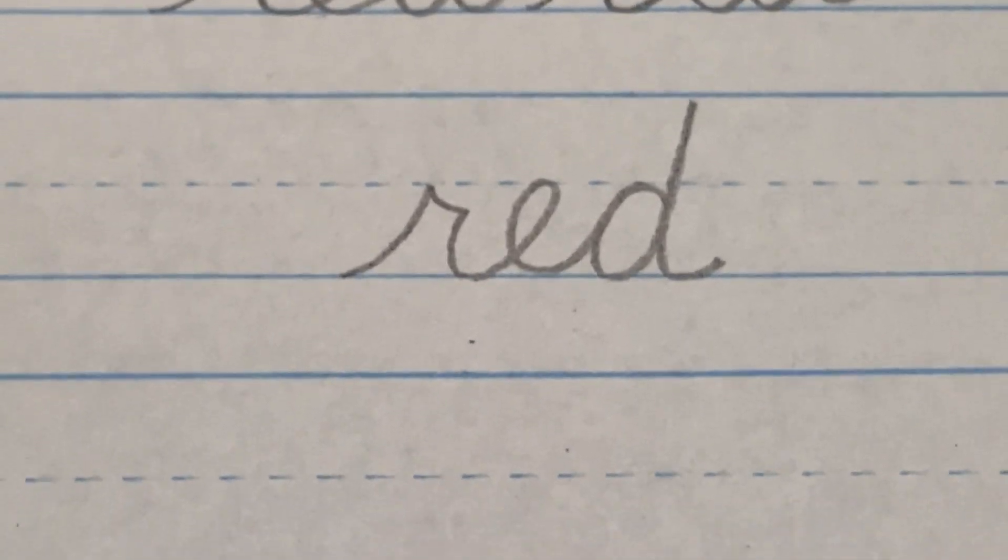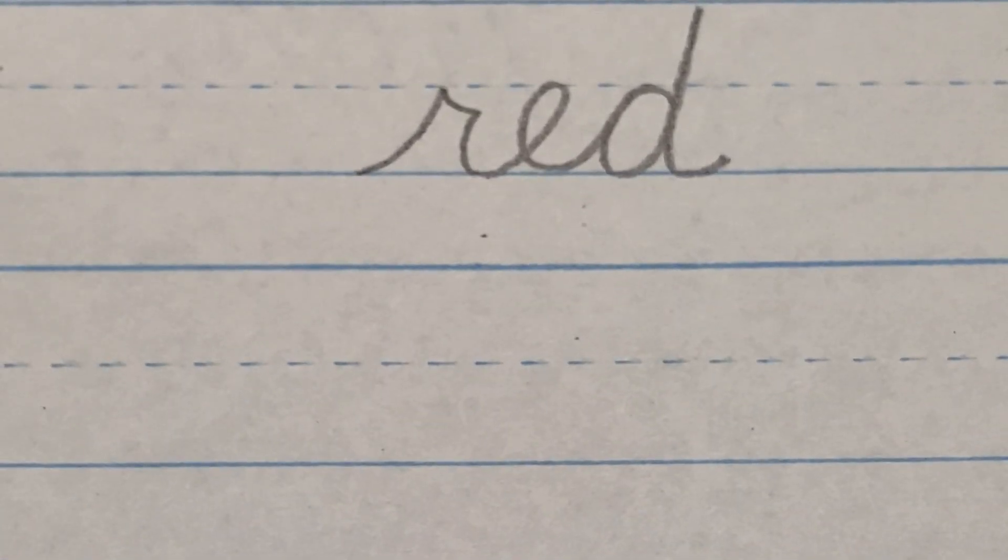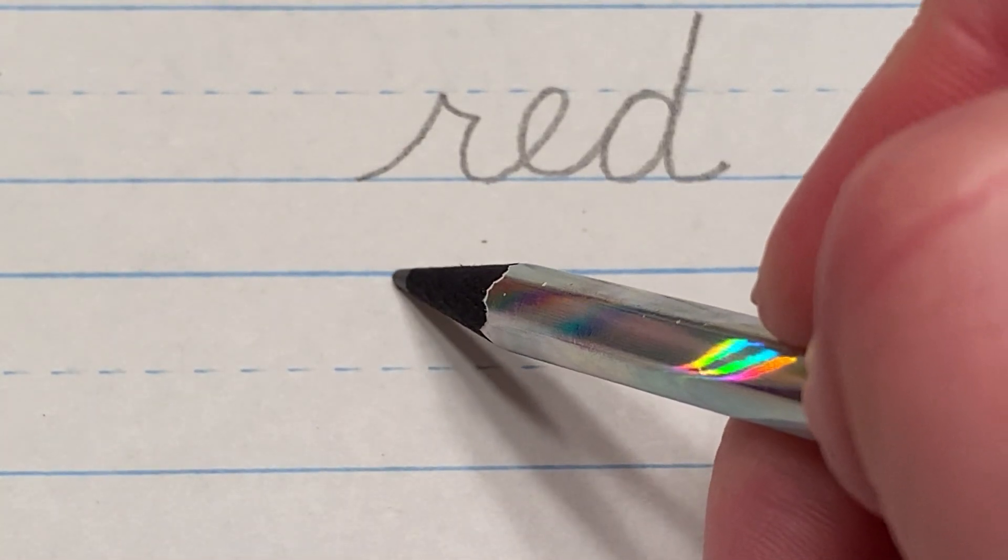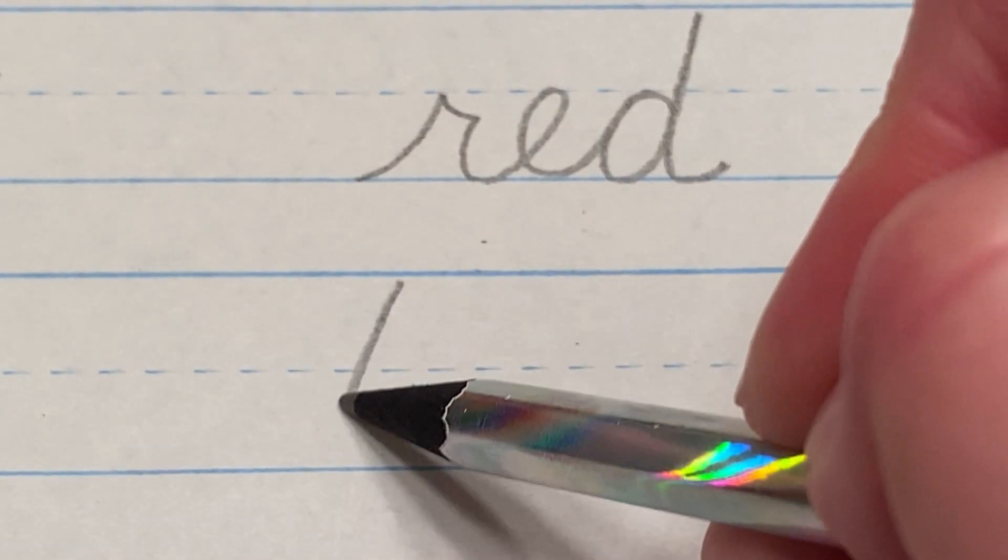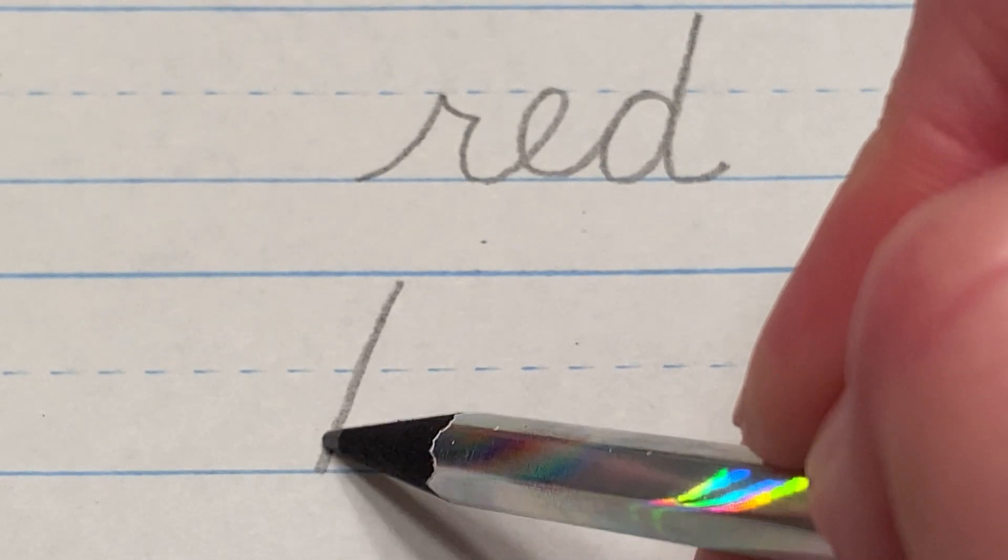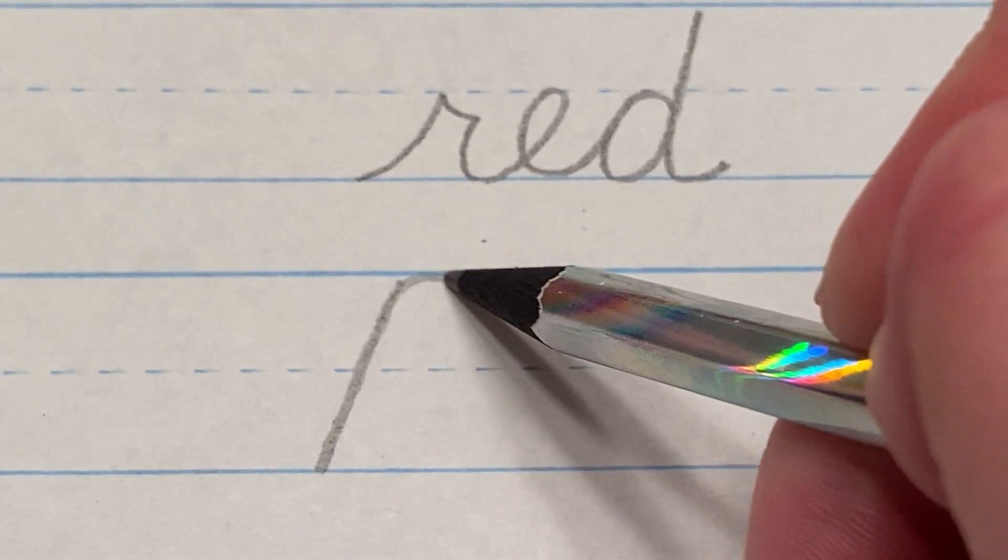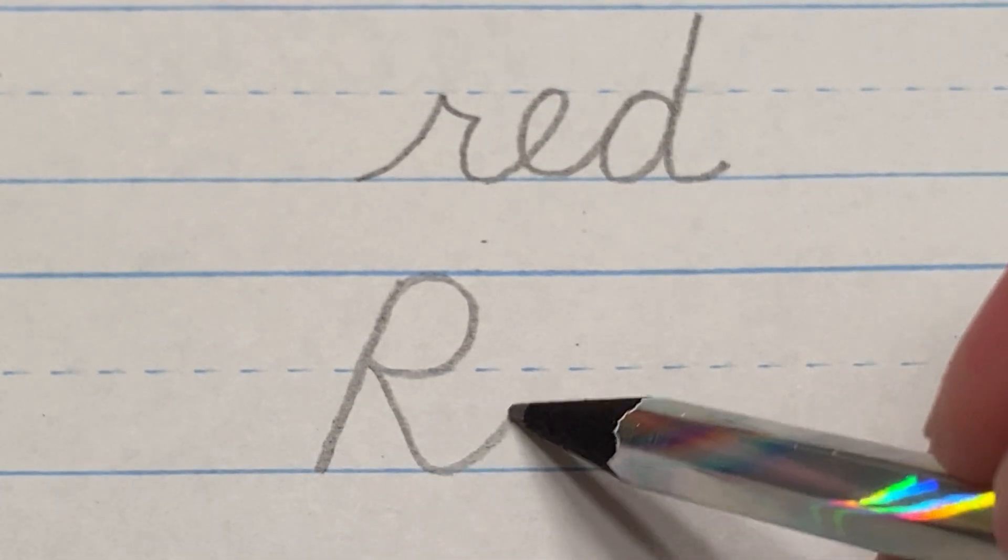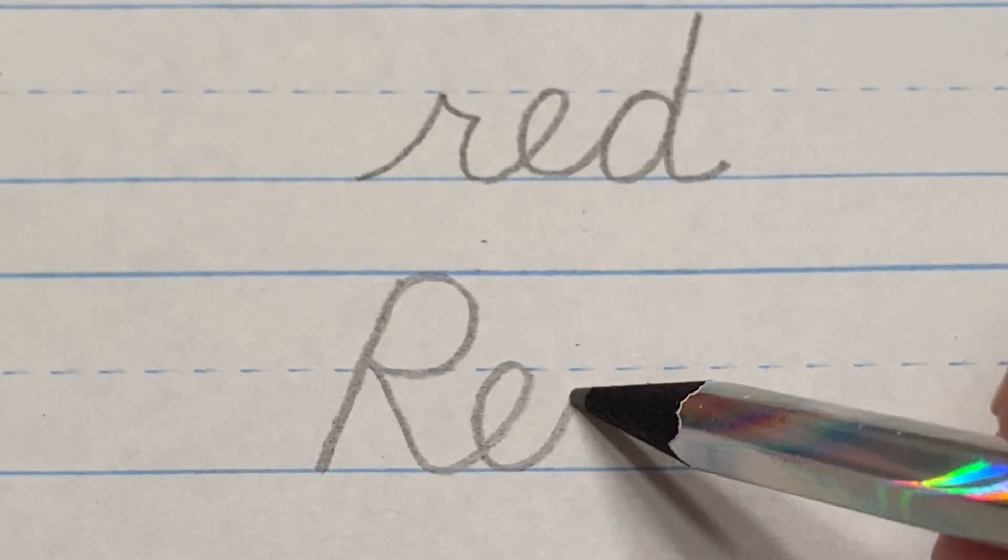It's pretty easy to write this word beginning with a capital R if you find yourself needing to do that. For that one you start up at the ceiling, slant down to the floor, all the way back up and around, hit the back, and then go straight into the E and the D.